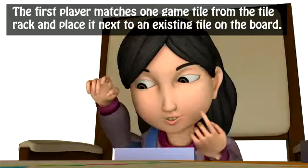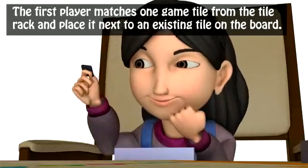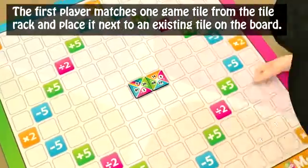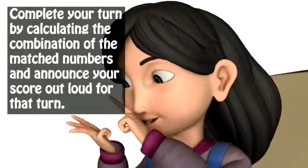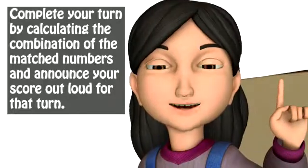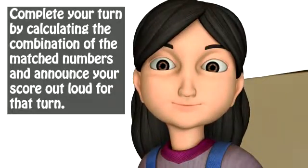The first player matches one game tile from the tile rack and place it next to an existing tile on the board. Complete your turn by calculating the combination of the matched numbers and announce your score out loud for that turn.